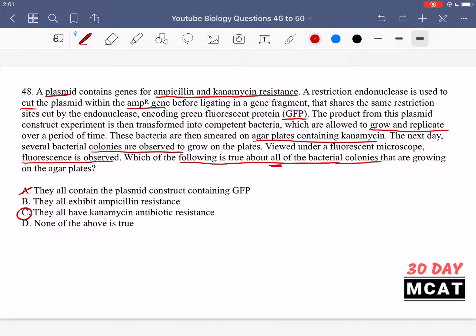Option B is saying they all exhibit ampicillin resistance. That is not true, because the whole point of what we did before to that plasmid is cut out the ampicillin resistance gene and replace it with GFP. So more likely, they are not resistant to ampicillin, because if they are fluorescing, that means that they uptook the plasmid, which gives them GFP instead of ampicillin resistance.